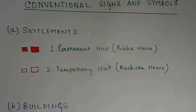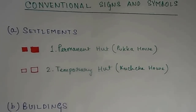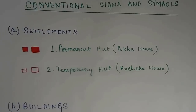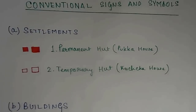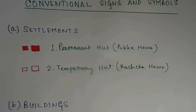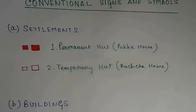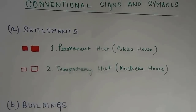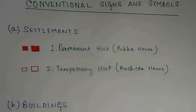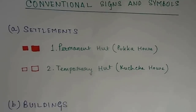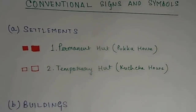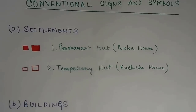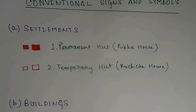Conventional Signs and Symbols. Now in a topographical map, you see many things. To understand all these things, you first need to understand conventional signs and symbols. Now in the previous videos, I taught you all the basic things. Now the things which I will teach after these are very important and require a proper understanding of the signs and symbols.